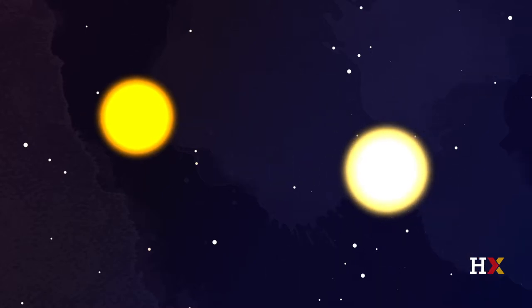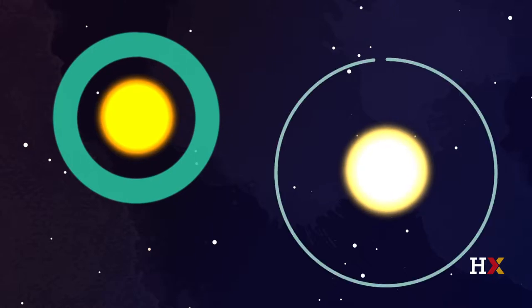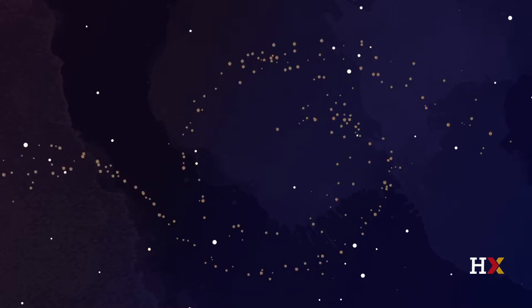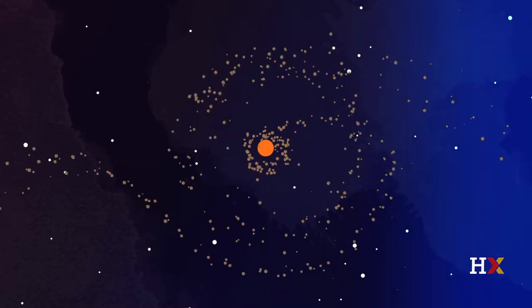This orange star therefore has a habitable zone that's closer in than our own sun's. By luck, a planet forms in that habitable zone, not too cold, not too hot.